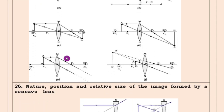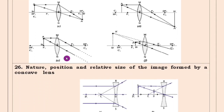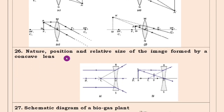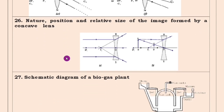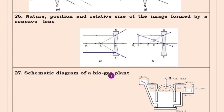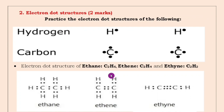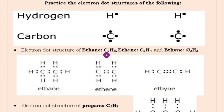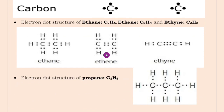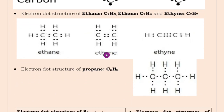For students who are below average, it is difficult to search everywhere and learn, so if everything is together, it is easy. The last diagram is biogas plant — practice that too. Next, for two marks, they are going to ask electron dot structure. Hydrogen has only one valence electron and carbon has four valence electrons, so it forms a covalent bond with other atoms. You have to use the dot structure. I have given that for you, so make note of which ones you have to learn.